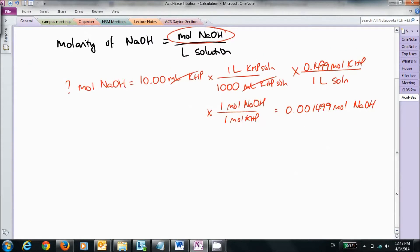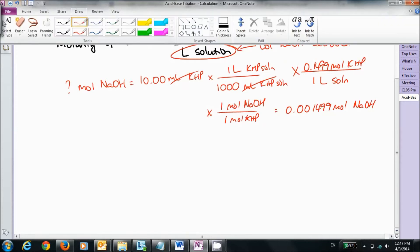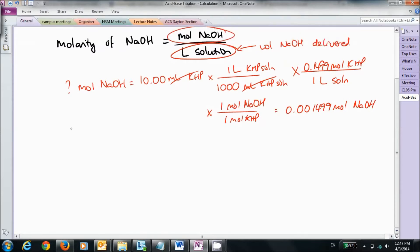The liter solution is the volume of NaOH delivered. So, in this case, therefore, I can find the molarity of NaOH by saying I have 0.001499 moles of NaOH divided by the liters of solution.